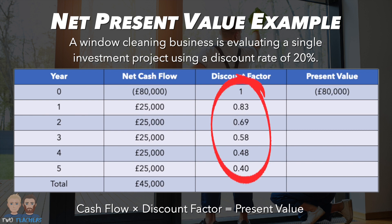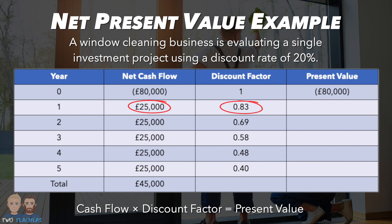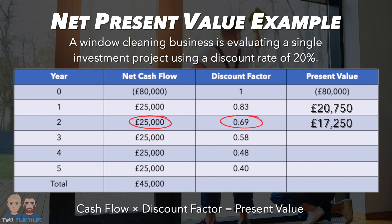In this example, the discount factors have been provided in the table. In year one, £25,000 is multiplied by 0.83, resulting in a present value of £20,750. In year two, £25,000 is multiplied by 0.69, resulting in a present value of £17,250. You may notice how the cash inflow is multiplied by a smaller discount factor in year two than in year one, because waiting 24 months means the money will be less valuable than after waiting just 12 months, and this trend continues year on year.